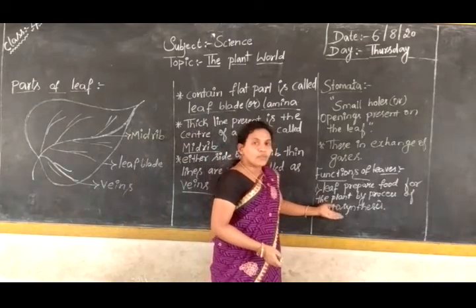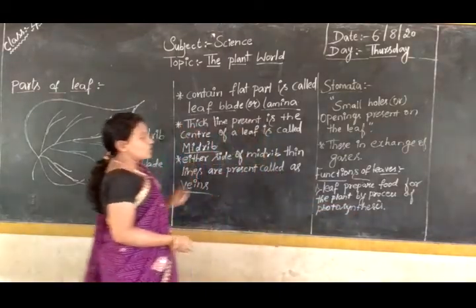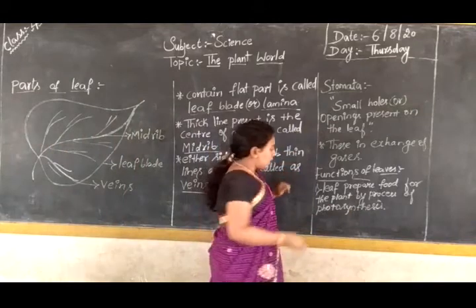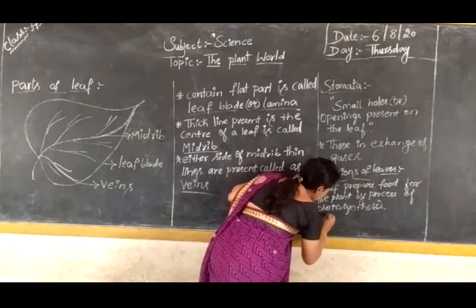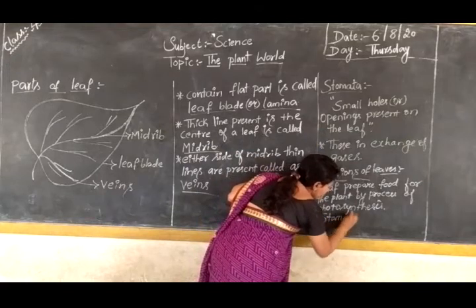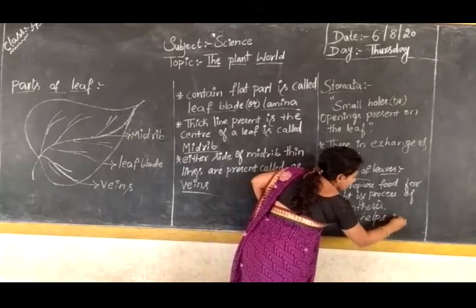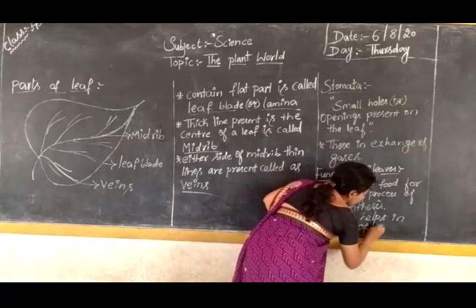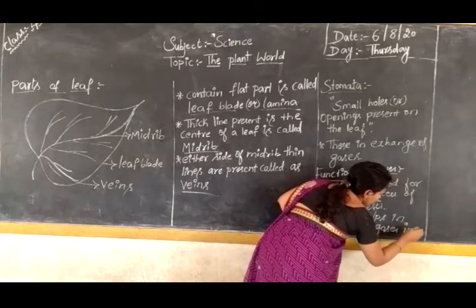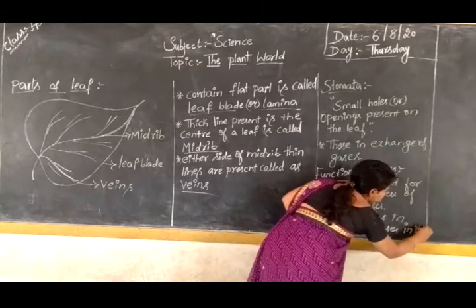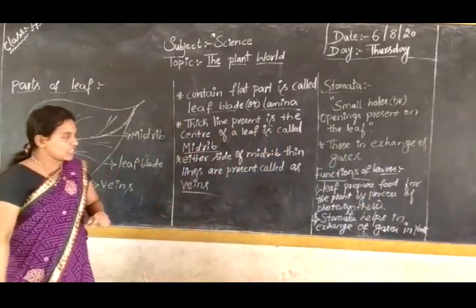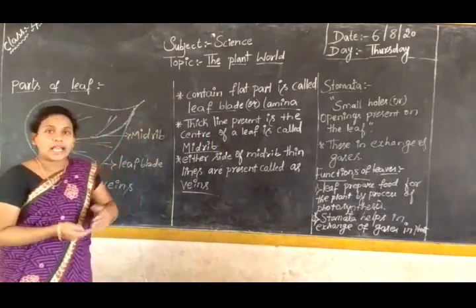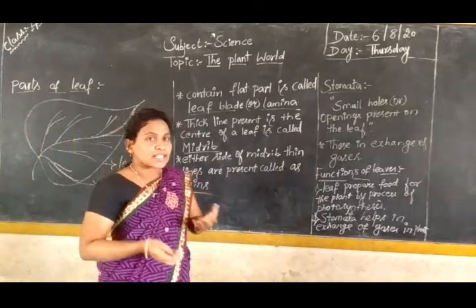In the next class, we will discuss photosynthesis in detail. The next function of the leaf is that it helps in the exchange of gases with the help of stomata. Stomata help in the exchange of gases in plants. One more function is that in some plants the leaf stores food. For example, cabbage and spinach — we directly eat them as food.